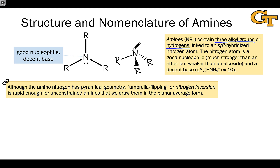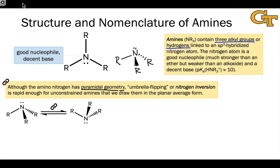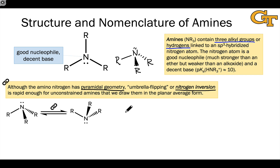One of those electron groups involves a non-bonding lone pair. The amino nitrogen does have pyramidal geometry — if we take a snapshot of a particular molecule containing an amine functional group, we will see pyramidal geometry. However, that geometry can flip very rapidly through a process called nitrogen inversion, and this is so rapid with such a low activation barrier that on average the nitrogen appears to be planar.